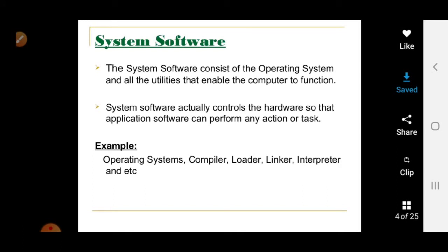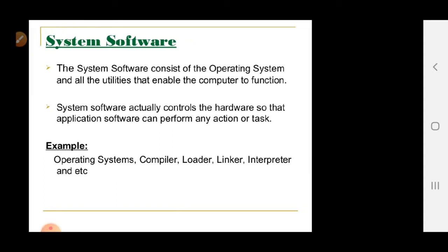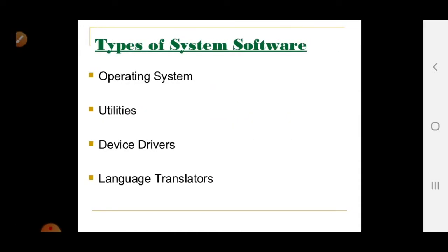Examples of system software are: operating system, compiler, loader, linker, interpreter, and others. An operating system like Windows is what basically runs your computer. Types of system software include operating systems, utilities, device drivers, and language translators.